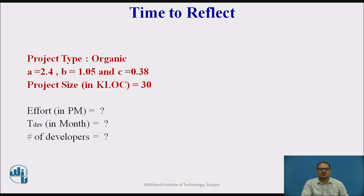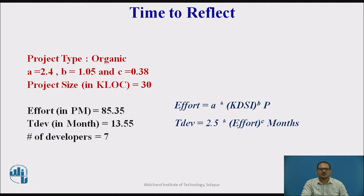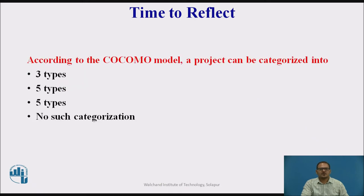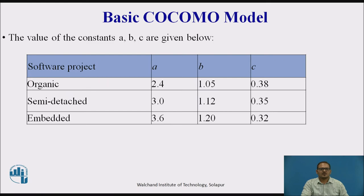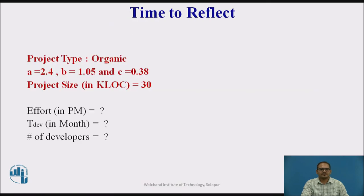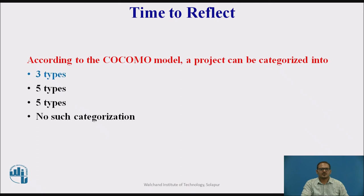The effort in person-months is 85.35, the development time in months is 13.55, and the number of developers is 7. Now answer this question: according to the COCOMO model, a project can be categorized into how many types? The answer is 3 types — organic, semi-detached, and embedded.